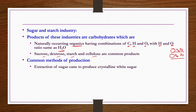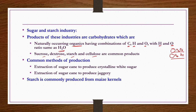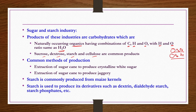The common method of production is extraction from sugarcane. It can be post-processed to produce crystalline white sugar or to produce jaggery. Starch is commonly produced from maize kernels and is used to produce derivatives such as dextrin, dialdehyde starch, and starch phosphates.